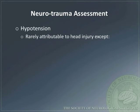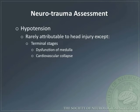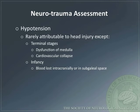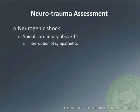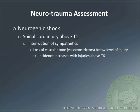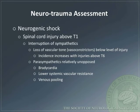Hypotension is rarely attributable to head injury, except in rare circumstances of terminal brain injury, infancy with loss of a large percentage of blood volume, and severe untreated scalp wounds. Neurogenic shock may occur with spinal cord injuries above T1 due to interruption of sympathetics and loss of vascular tone below the level of injury. In this setting, parasympathetics are unopposed and lead to bradycardia, lower vascular resistance, and venous pooling.